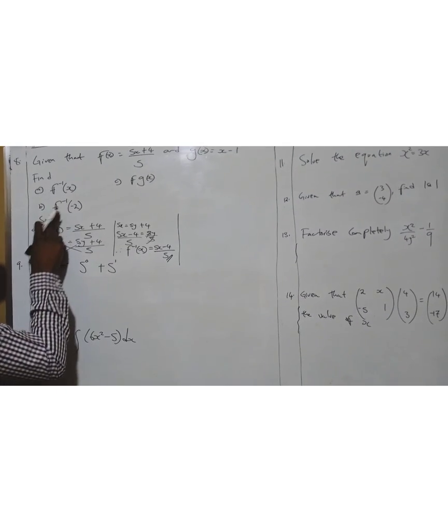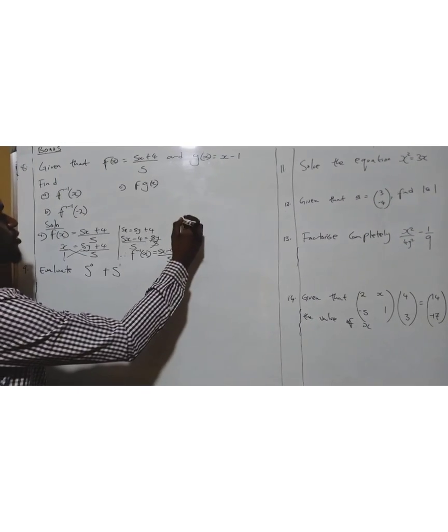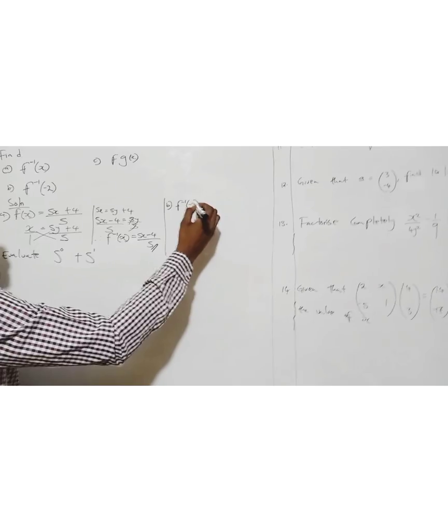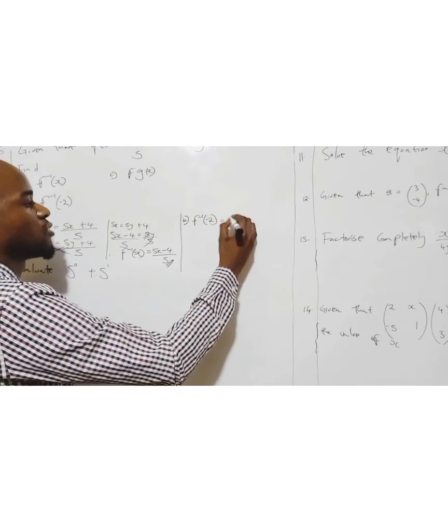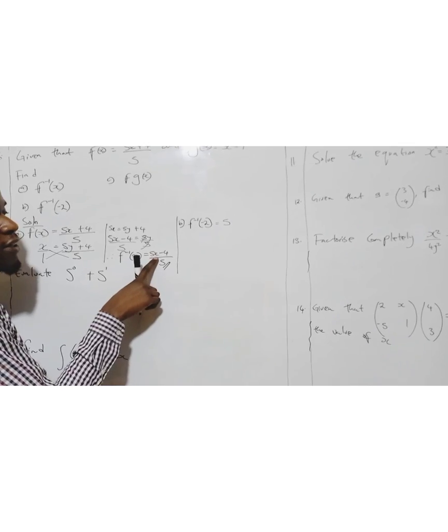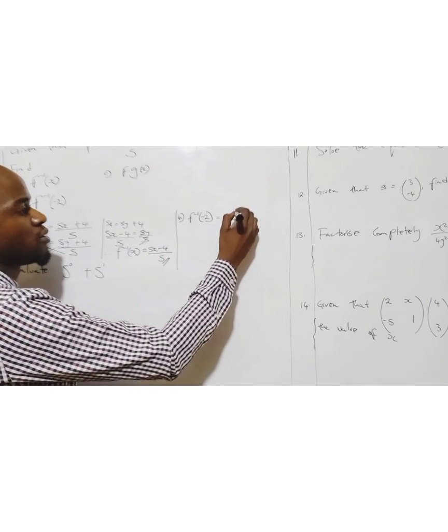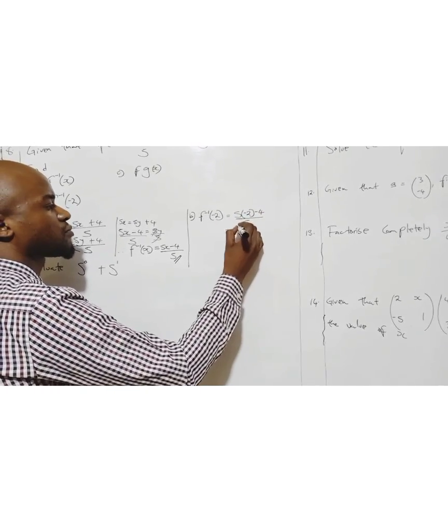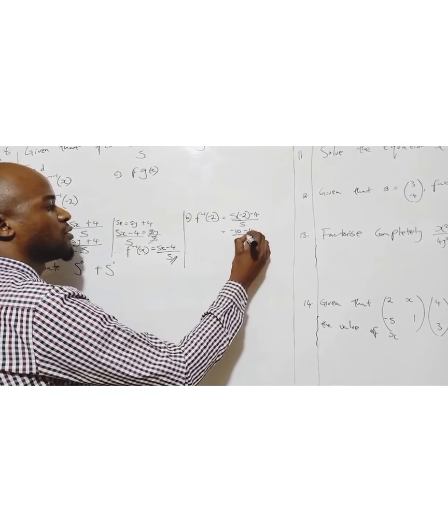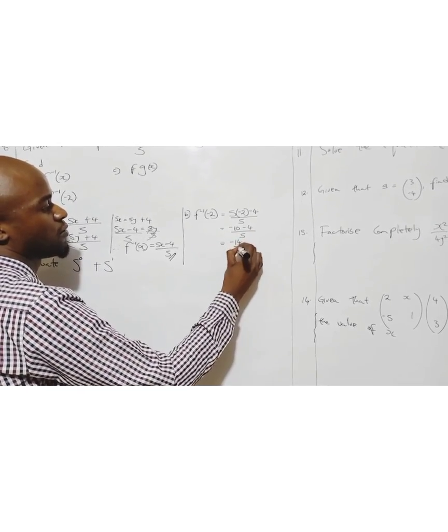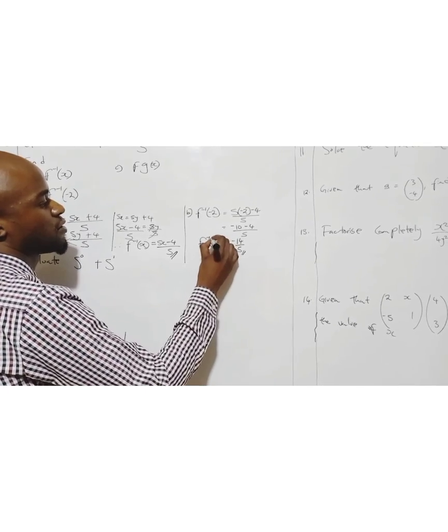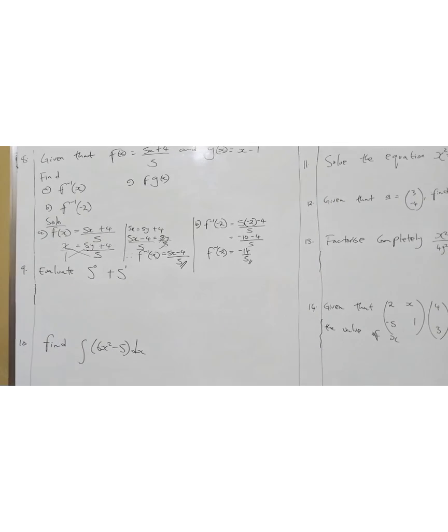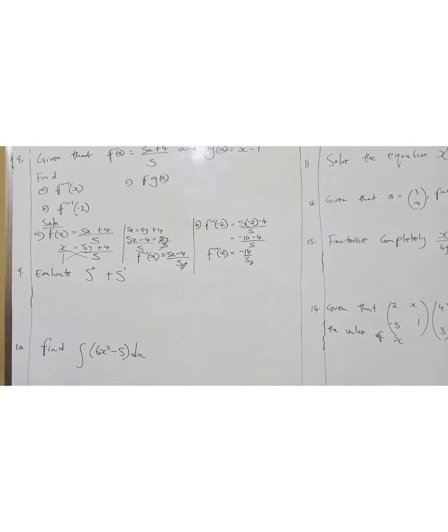Part b: f inverse of negative 2. I'll write my inverse. Where is x? I'm going to put negative 2: negative 10 minus 4 over 5. What is this? Negative 10 minus 4 over 5 is negative 14 over 5. That's my f inverse of negative 2. It's easy, you don't need to complicate your life.